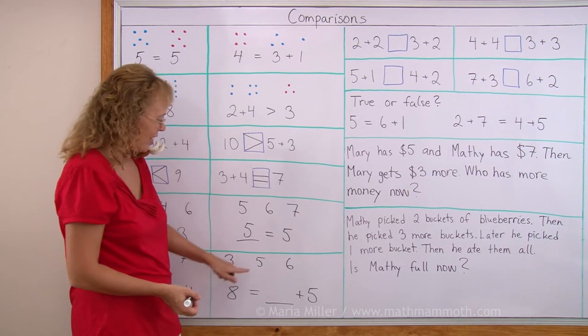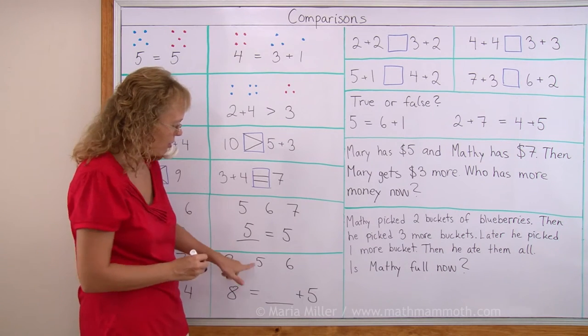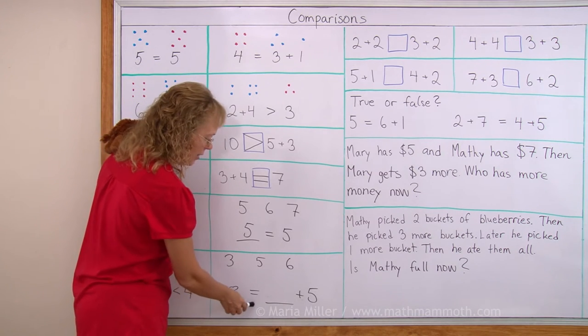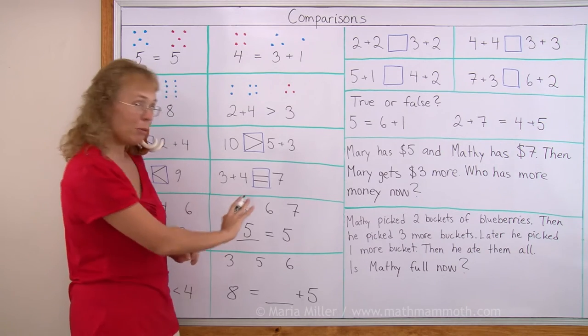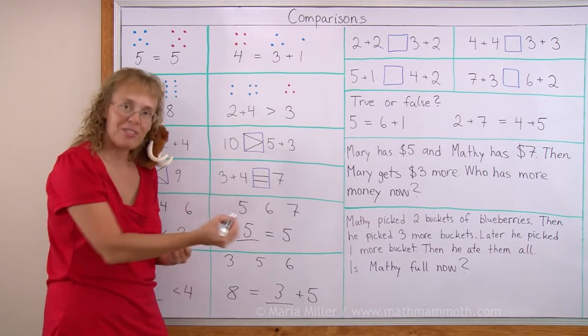Over here. 5, 6 and 3. Which one would go here? Just try. If I put 5 here, 5 plus 5 would be 10. 8 equals 10. No, that won't work. Can you see which one will work? 3 will work. 8 equals 3 plus 5.